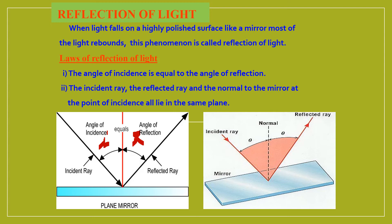The incident ray, the reflected ray, and the normal to the mirror at the point of incidence all lie in the same plane. That is, this is the incident ray, this is the reflected ray, and this is the normal. All three of them are in the same plane, means they are not coming out of the mirror. So these are the two important laws of reflection.